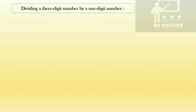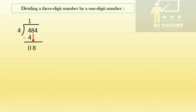Now let's learn how to do division of a three-digit number by a one-digit number. We'll see a few examples. First: 484 divided by 4. We begin by taking one digit at a time. Four will go how many times in the four times table? It will be one — four ones are 4, four minus four is 0. We bring the eight down using an arrow. Eight will go how many times in the four times table? It will be two — four twos are 8, eight minus eight is 0.